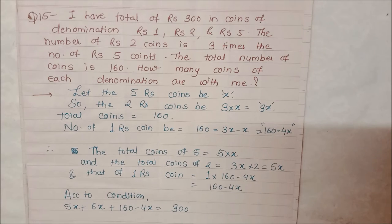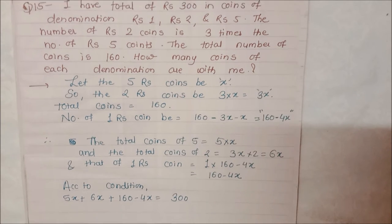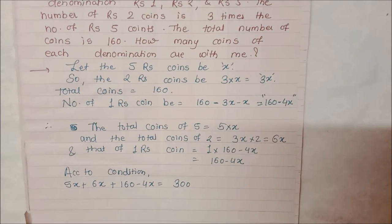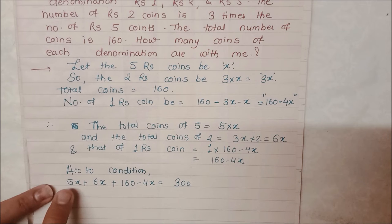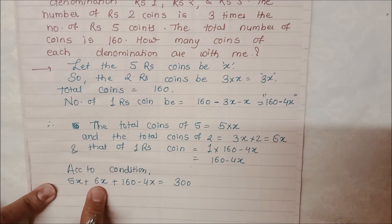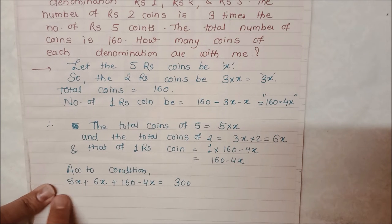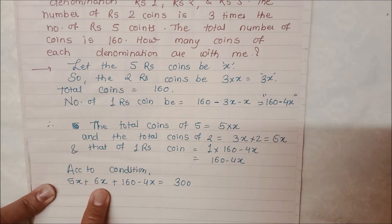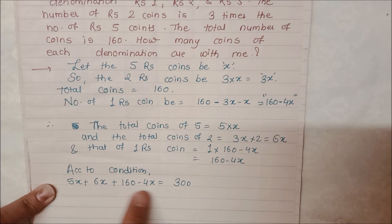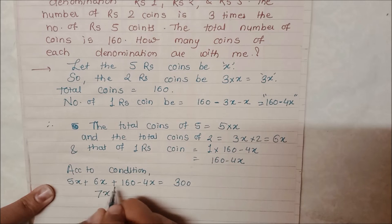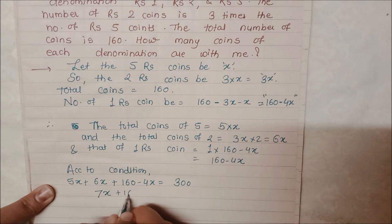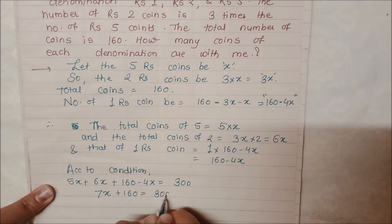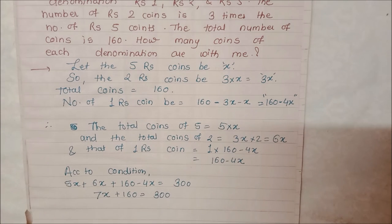Ab bas hamen ise solve karna hai. Five plus six kitna hoga? Ye plus mein hai, variables ki addition hogi agar same variable hai. To six plus five, eleven hota hai. Aur eleven minus four — ye ho gaya hamara seven x plus 160 is equal to 300.